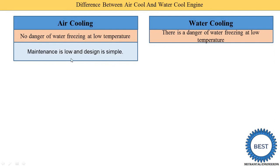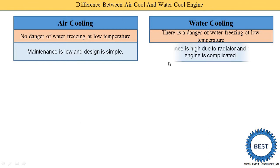The second point: maintenance is low and design is simple for air cooling because it has very few components — no pump is required, no other moving parts. But in a water cooling system, there are many components like pumps and radiators, so maintenance is high. The design of a water-cooled engine is complicated because it requires engine jackets between the cylinder liners and the engine body. In air cooling, the design is simple — we just need to provide fins on the outer body of the engine.